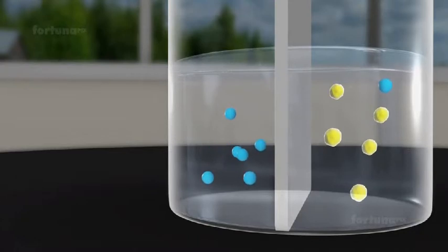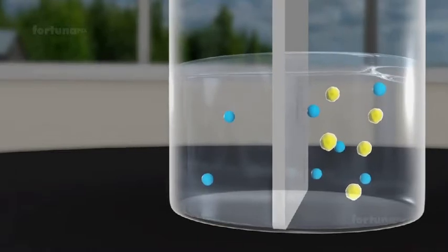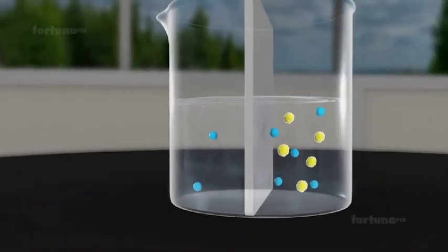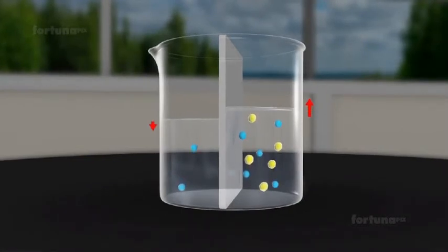The water from the left will begin moving across the membrane to the right where the urea is present. As a result of this movement, we'll see a slight increase in the water level on the right and a drop in the level on the left.